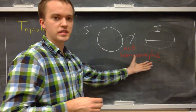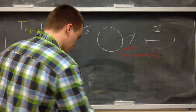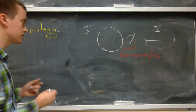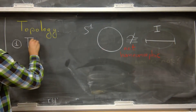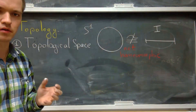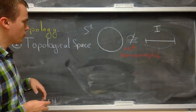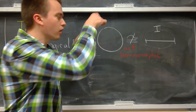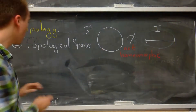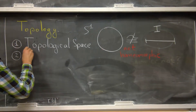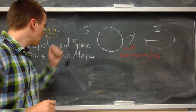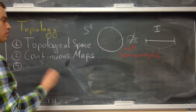These maps require a notion of space, so the first thing we study in topology is the topological space — an abstract mathematical space. Then, on this space, we want to define mappings with certain properties, which leads us to study continuous mappings. After continuous maps, the next thing we discuss is homeomorphism.